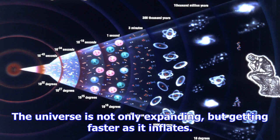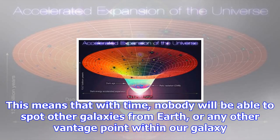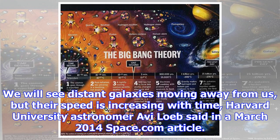The universe is not only expanding, but getting faster as it inflates. This means that with time, nobody will be able to spot other galaxies from Earth, or any other vantage point within our galaxy. We will see distant galaxies moving away from us but their speed is increasing with time, Harvard University astronomer Avi Loeb said.